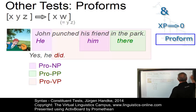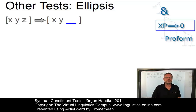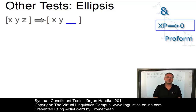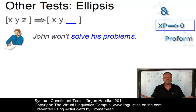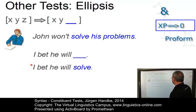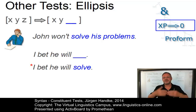Let us finally look at ellipsis. Under certain discourse conditions, it is possible in English and in many other languages for some part of the sentence to undergo ellipsis — that is, to be omitted — provided that the omitted part can be recovered from the context. Here is an example: 'John won't solve his problems' — and like in all the other tests, it is the entire constituent 'solve his problems' that has to be omitted. So ellipsis is something that predominantly applies to predicates.